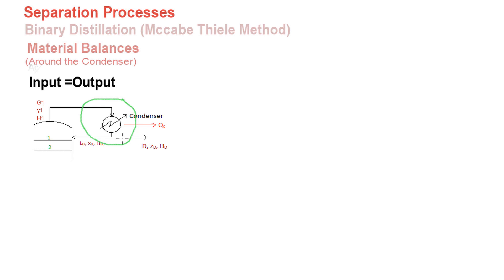If you haven't seen how this is broken down, please check the previous video for that equation. We must first identify what streams are entering the system boundary and the streams that are leaving it. It can be clearly shown that the only stream entering is the vapor stream leaving the top of the column.